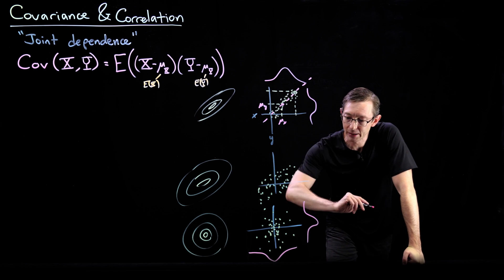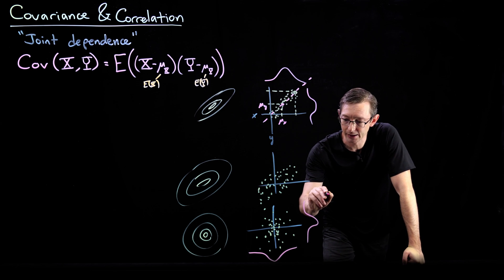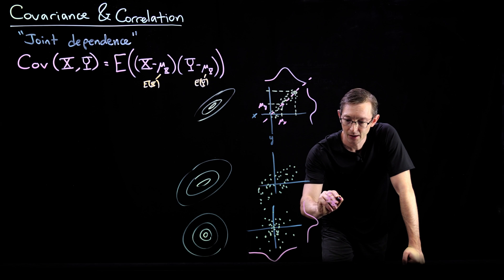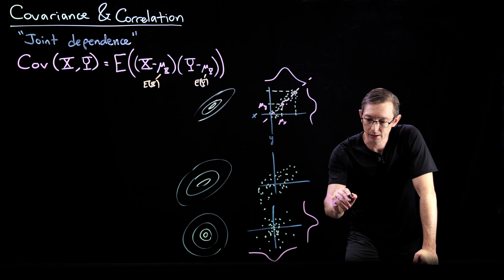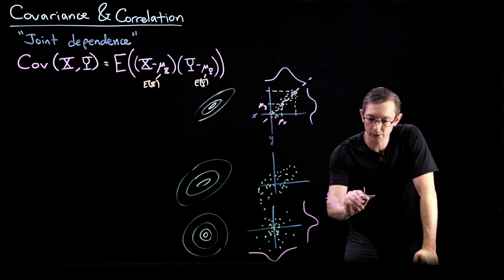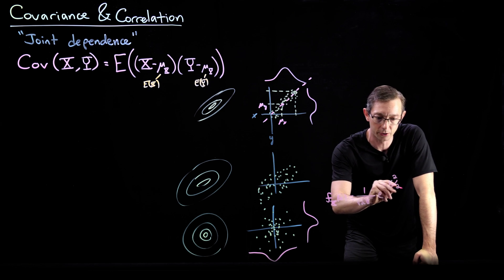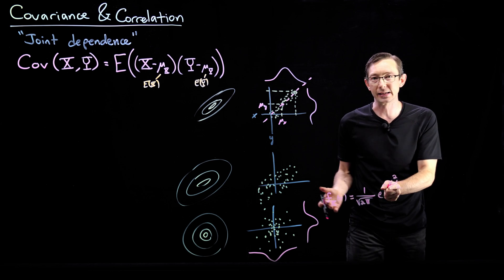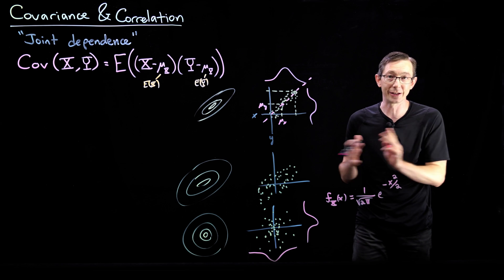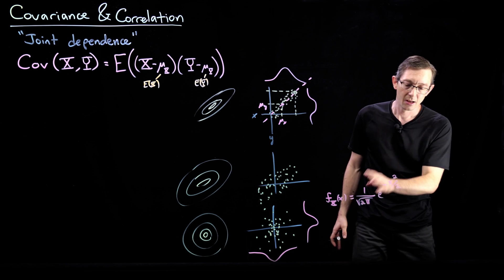So if I have a PDF, fx of little x equals 1 over root 2 pi e to the minus x squared over 2. I'm saying that this thing is centered at zero and it's a standard deviation of 1 just to make my life easier. It doesn't have to be.